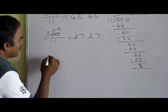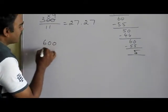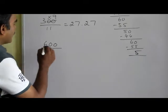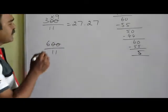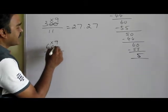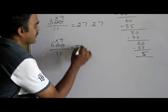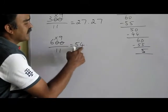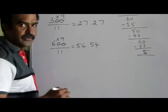Let me go for one more number. What is 6 times 9? 54. So my answer is 54. The same digits I am going to write after the decimal point, giving 54.54.